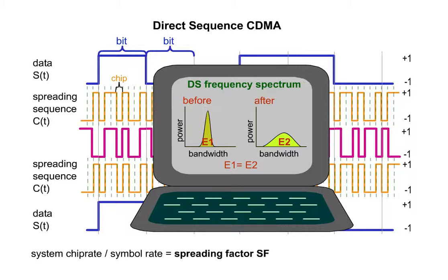Thus, band spread signals can be transmitted with a lower spectral transmit power than unspread signals. The signal's energy and its information are distributed over a greater bandwidth.